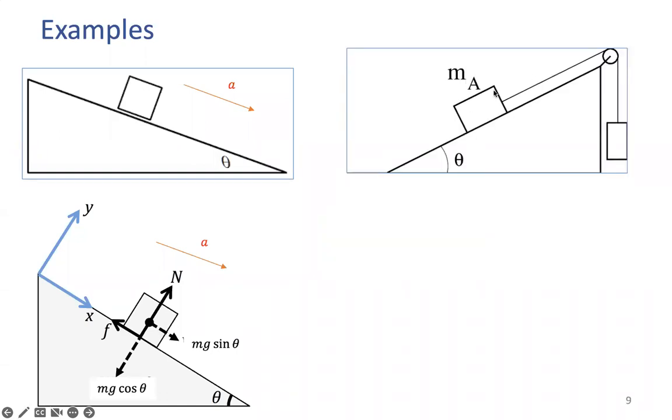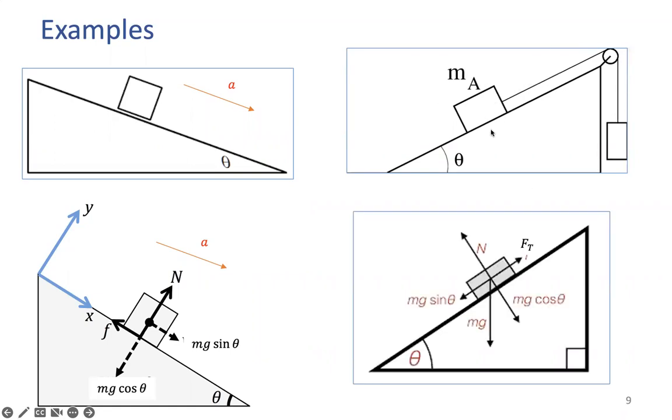Sometimes we will have one mass on the table, on the slope. Other mass is hanging. Still, when you focus on this guy right here on the slope, the forces, there will be a tension force, the normal force, force of gravity has components. In this case, I assume there is no friction. That's why I did not include any friction force.